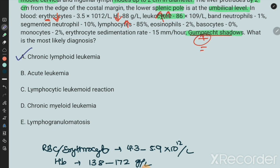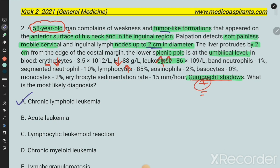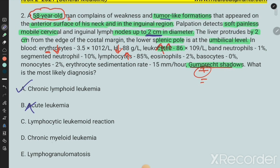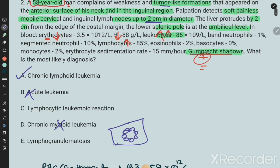Why not acute leukemia? Because there are chronic symptoms with tumor-like formations, two centimeters, large in number, so it's chronic. Cancel acute lymphocytic leukemia. Lymphocytic leukemoid reaction has no leukemia signs. Chronic myeloid leukemia is ruled out because myeloid cells are not present. Lymphogranulomatosis is a different blood disorder with granular formation on histopathology. This is the answer. Now we move to the third question.